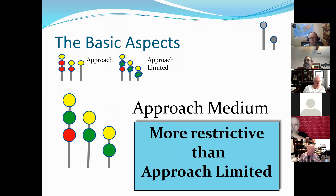Approach medium is the more restrictive fail-safe signal. If that flasher locks up, you're going to be given an approach medium. Now I need to clarify: approach limited and approach medium are both valid signals. Approach medium is not just there as a fail-safe against approach limited — it can be used by itself. It's possible you could come up on a signal and see a solid green approach medium. It doesn't mean the signal has failed — it is a valid signal aspect in and of itself.